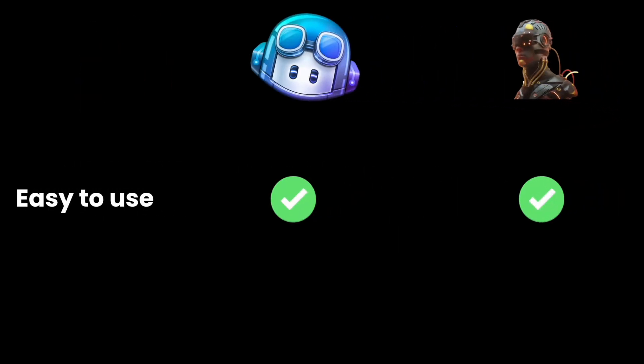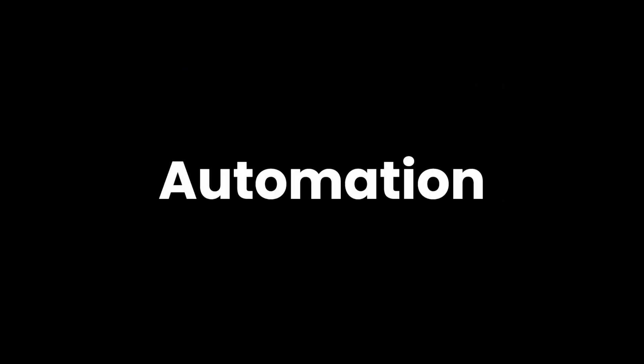The next category is easy to use. From my experience, once you understand AutoGPT, you just put in a prompt and it does all the work by itself. GitHub Copilot is also very intuitive and easy. So both of them get a mark from me in this category.